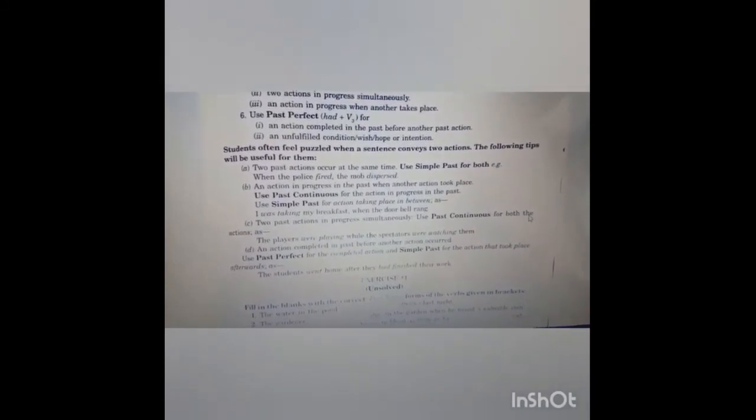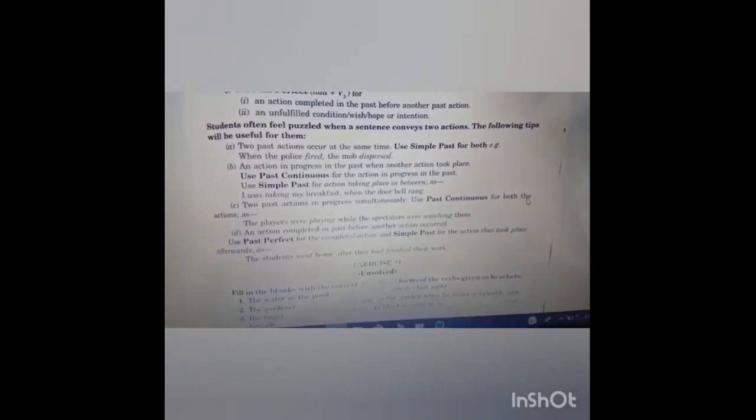Additional rules to remember: if two actions occur in the past at the same time, use simple past for both. If two actions occur in the past one after another, use simple past for both. If an action was in progress in the past when another action took place, use past continuous for the action in progress and simple past for the action that took place. For two past actions in progress simultaneously, use past continuous for both. Example: the players were playing while the spectators were watching. For an action completed in the past before another action occurred, use past perfect for the earlier action.